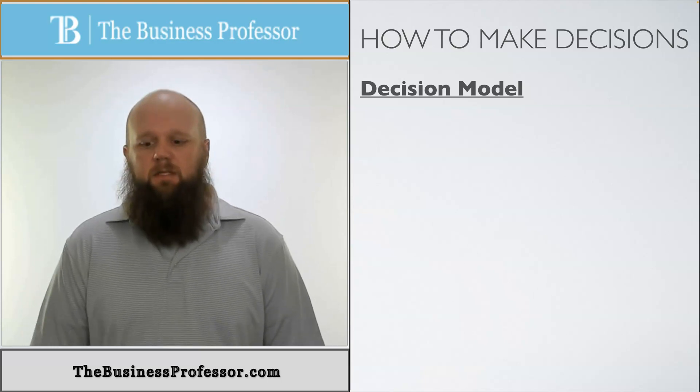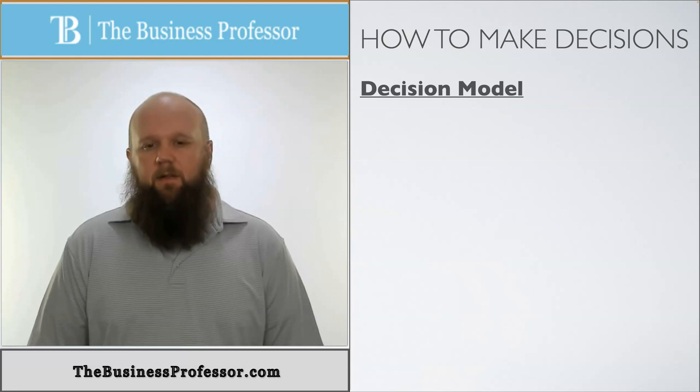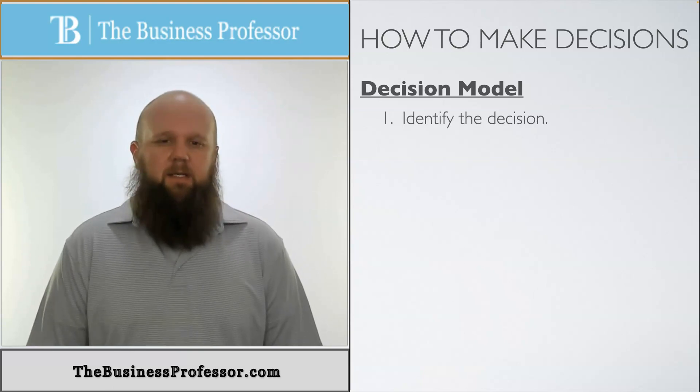So how do we make decisions? There's actually steps to this. The decision-making model has five steps. The first one being identify the decision, identifying what you're trying to decide upon.